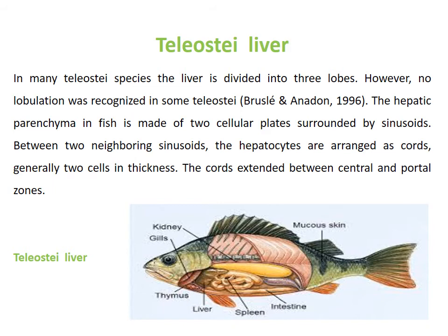There are some anatomical variations in fish liver, such as in teleost liver. In many teleost species, the liver is divided into three lobes. However, no lobulation was recognized in some teleosts. Some studies suggest that there is no lobulation of the fish liver, while others suggest that the teleost liver has three lobes.